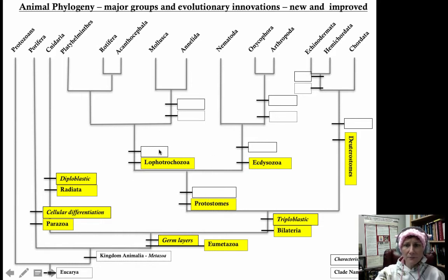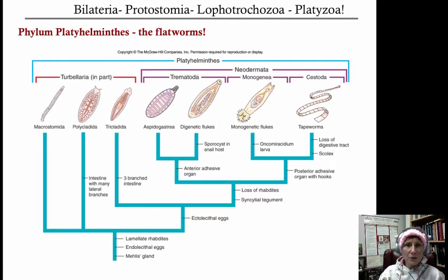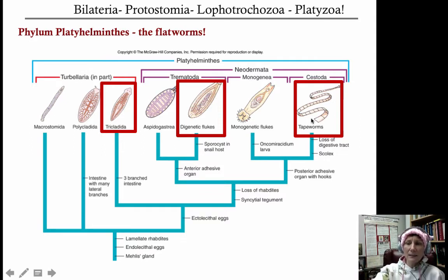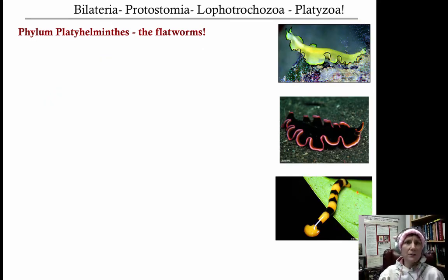Here's the Lophotrochozoa, and the first group we'll cover is the platyhelminthes — the flatworms. The phylogeny from your book shows all the flatworm groups, but we won't cover all of them — there are too many, and some clades are not monophyletic. We're going to cover three exemplar groups: one member of the turbellaria — the tricladida; one of the trematodes — the digenetic flukes; and the cestodes, with tapeworms as the primary example. But first, let me tell you about the general characteristics of the flatworms.